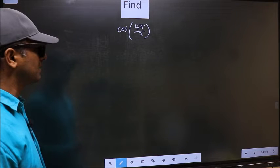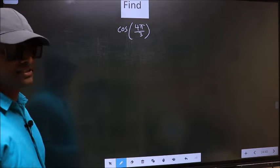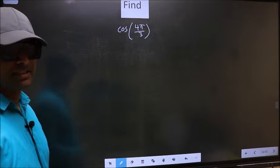Find cos 4π by 3. To find this, we should follow this method.